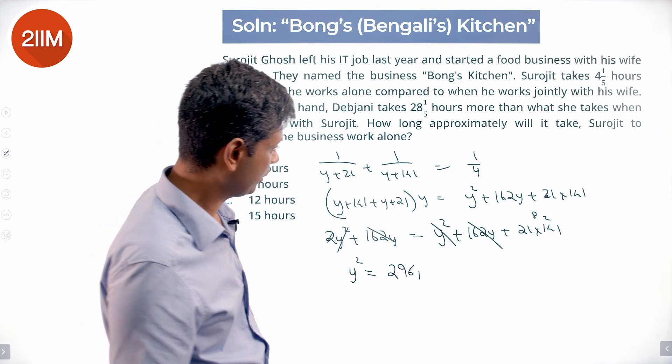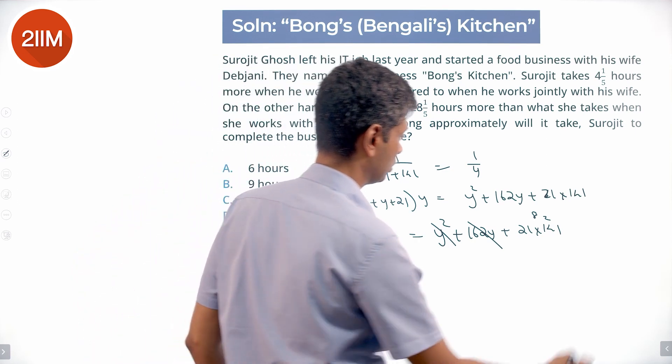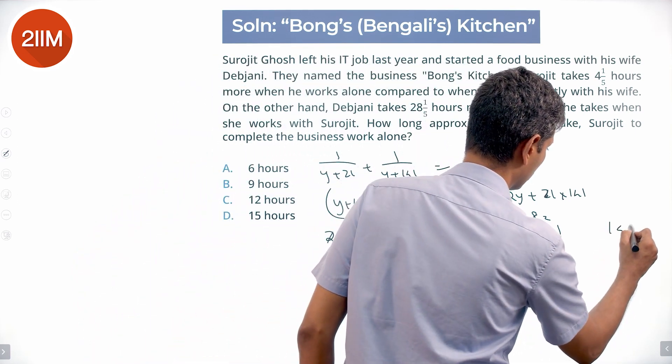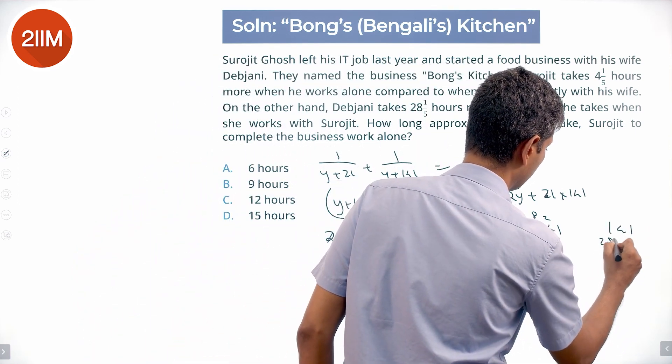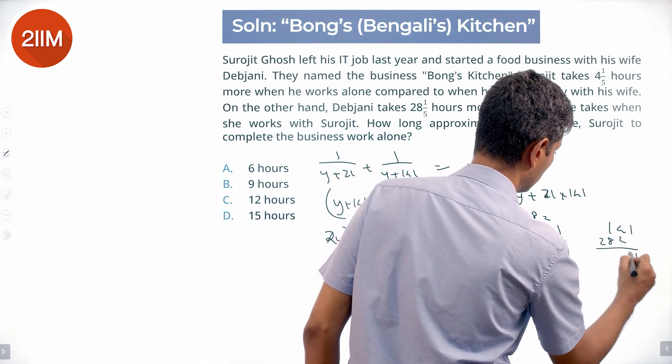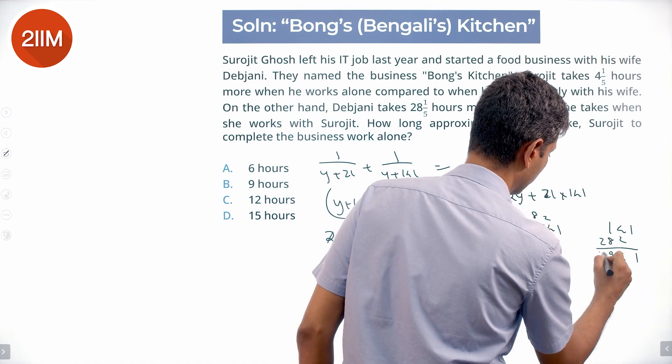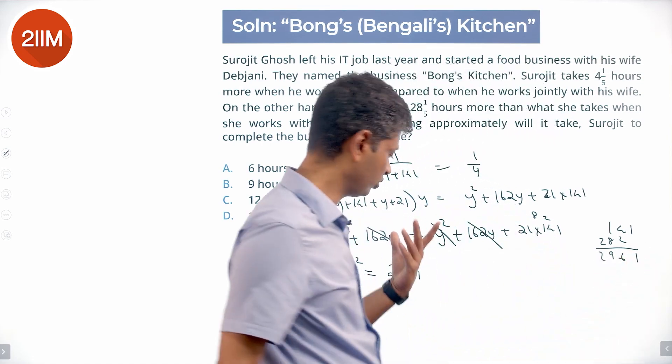So 21 × 141: that's 21 × 141 = 282 plus 16 = 2961. So y² = 2961. Nice.